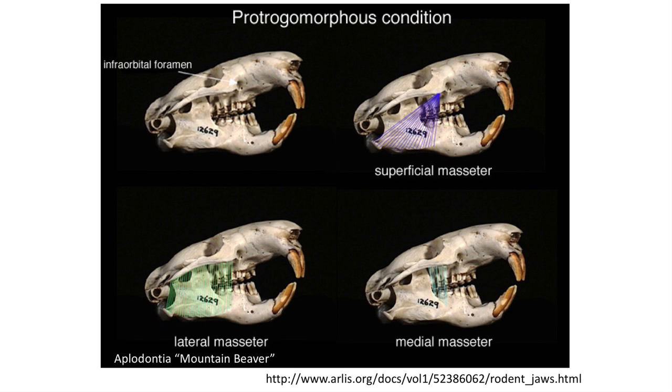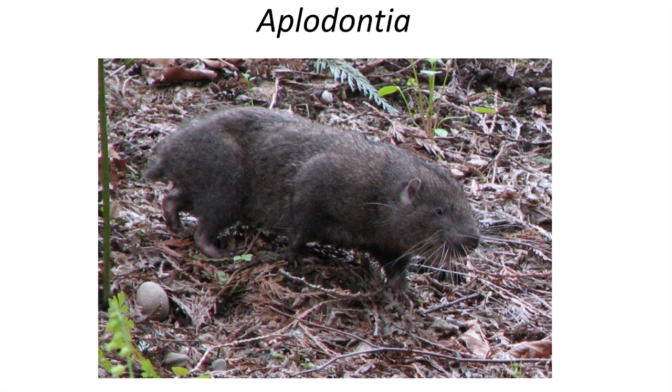Let's look at the protrogomorphous condition more closely to see where the three parts of the masseter muscle insert and attach. The lateral masseter attaches from the lower dentary onto the ventral edges of the zygomatic arch, and the superficial masseter attaches onto the anterior edge of the zygomatic, while the medial masseter, which arises more medially on the dentary, attaches to the anterior ventral edge of the zygomatic arch. This style is found in the mountain beaver Aplodontia, found in the Pacific Northwest of North America. The protrogomorphous condition was used for many years to group primitive rodents together, since it is found in most early groups of fossil rodents, like the Ischyromyids and Cylindrodontidae families, which are well known in the early Eocene.